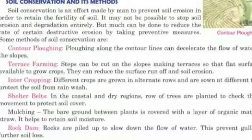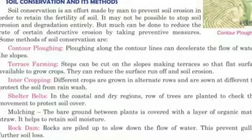Soil conservation is an effort made by man to prevent soil erosion in order to retain the fertility of soil. Some methods of soil conservation are: first, contour plowing — plowing along the contour lines can decelerate the flow of water down the slopes. Second, terrace farming — steps can be cut on the slopes making terraces so that flat surfaces are available to grow crops, which reduces surface runoff and soil erosion.